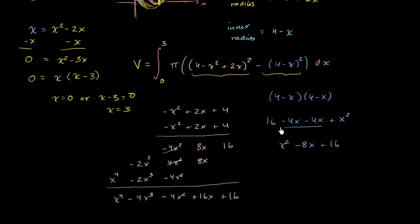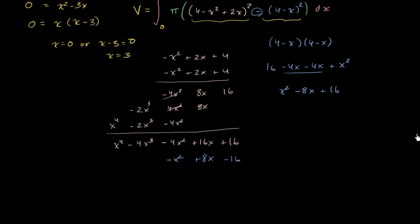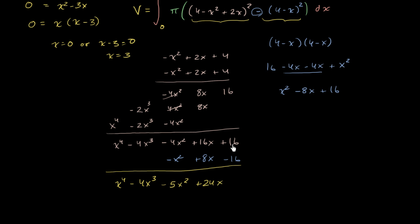But we're going to subtract this. So with the negative sign out front, we add the negative of it: negative x squared plus 8x minus 16. Adding that to our earlier expansion, we get x to the fourth minus 4x to the third minus 5x squared plus 24x. The constant terms cancel out.